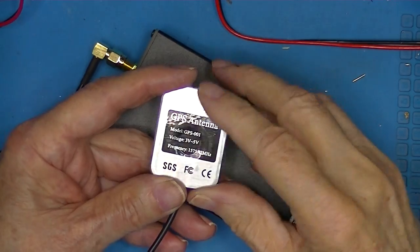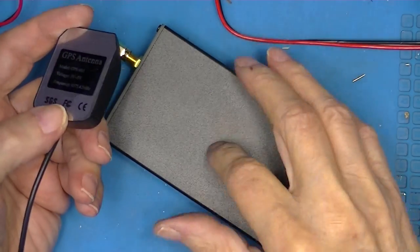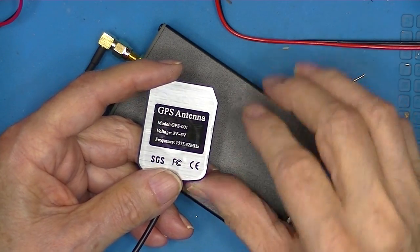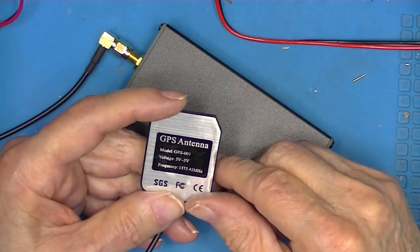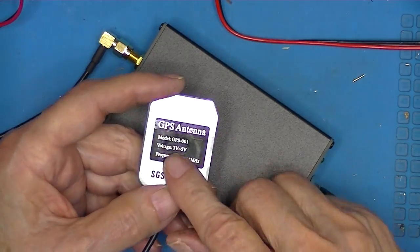This is the GPS antenna that came with this oscillator and you see it's 3 to 5 volts. This is 3. It's magnetic on one side.